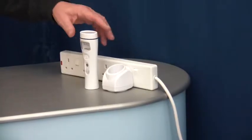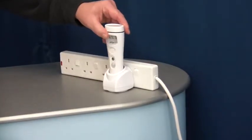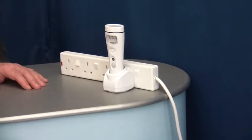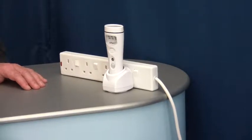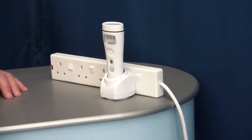The torch sits inside the holder. The holder plugs into a standard 13 amp socket, and the holder charges and maintains the batteries inside the torch.